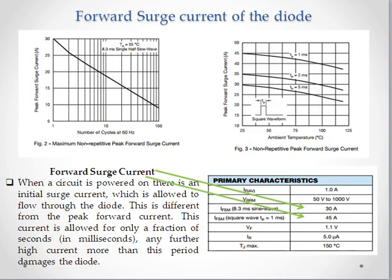Another important specification is the forward surge current. When you power on a circuit, there is a sudden increase in current because the circuit sees a sudden change in load, causing a spike. This is called a forward surge current, and it lasts for only a matter of milliseconds. This characteristic is very important since the diode is mostly used at the input of circuits.